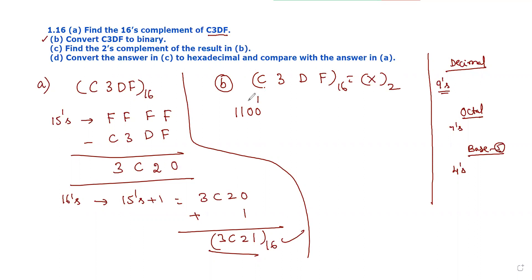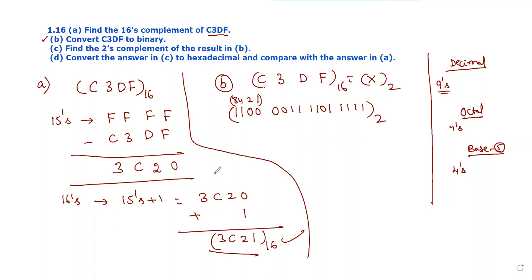Using 4 bits: 8+4 is 12, so C is 1100. Next, 3: 2+1, so 0011. D is 13: 8+4+1, so 1101. F is 15, so all ones: 1111. This is the binary for the given hexadecimal number. This is the second bit answer.